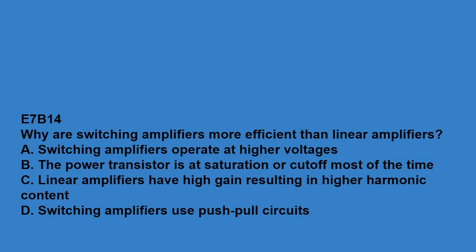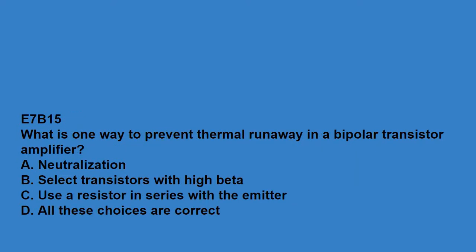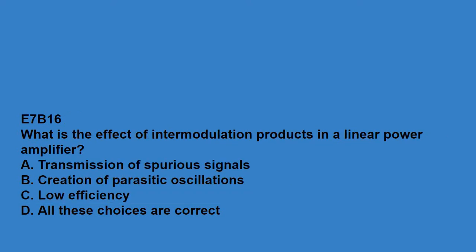E7B14, why are switching amplifiers more efficient than linear amplifiers? The power transistor is at saturation or cutoff most of the time. E7B15, what is one way to prevent thermal runaway in a bipolar transistor amplifier? Use a resistor in series with the emitter. E7B16, what is the effect of intermodulation products in a linear power amplifier? Transmission of spurious signals.